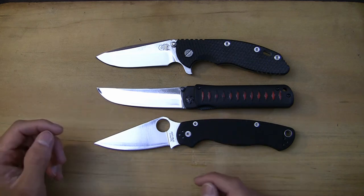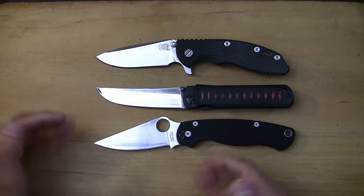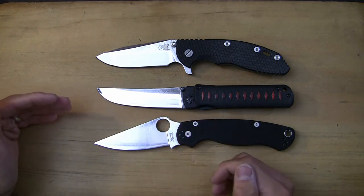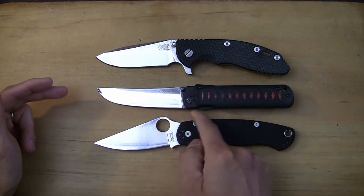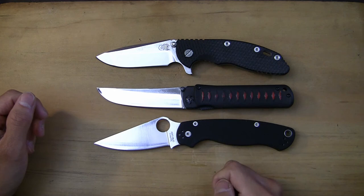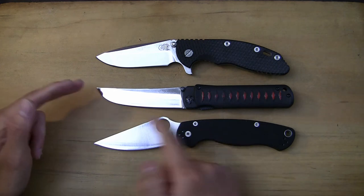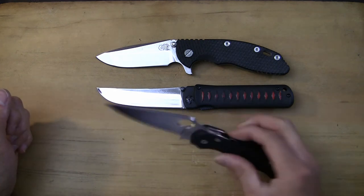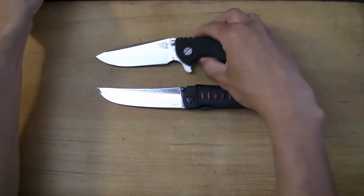Either way, the Whisper obviously outperforms in terms of cutting area or cutting length because it doesn't have any choils at the blade area much like the XM18 does. So you're getting a lot more cutting length with the Whisper. Alright, so let's get these knives off the table.